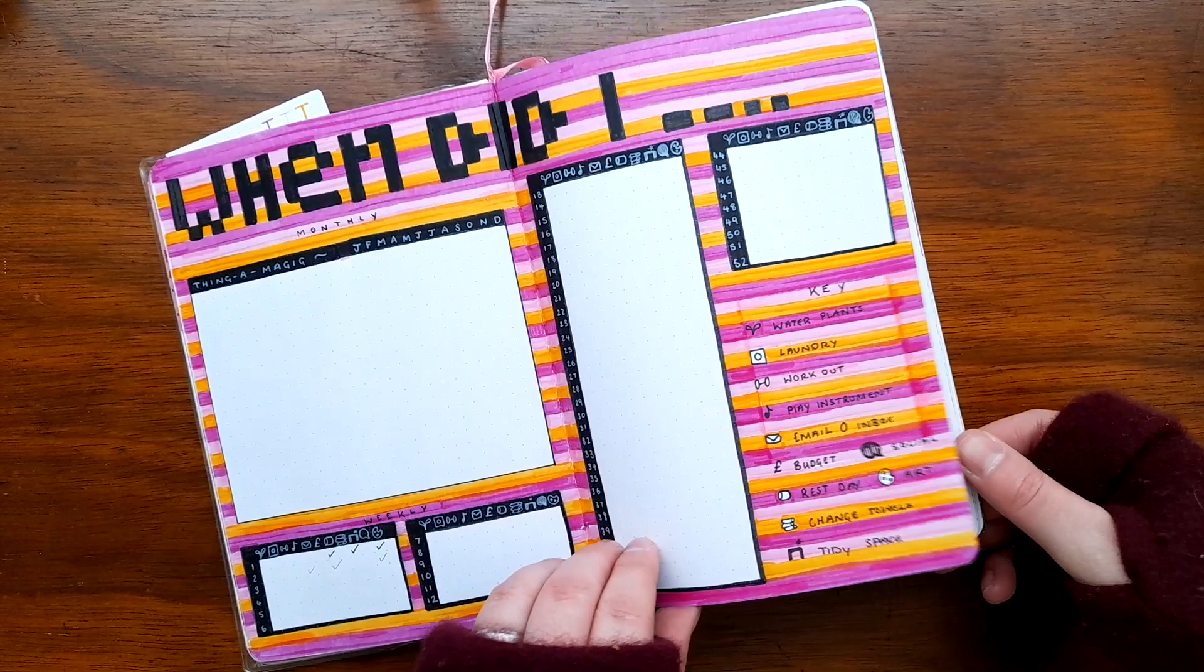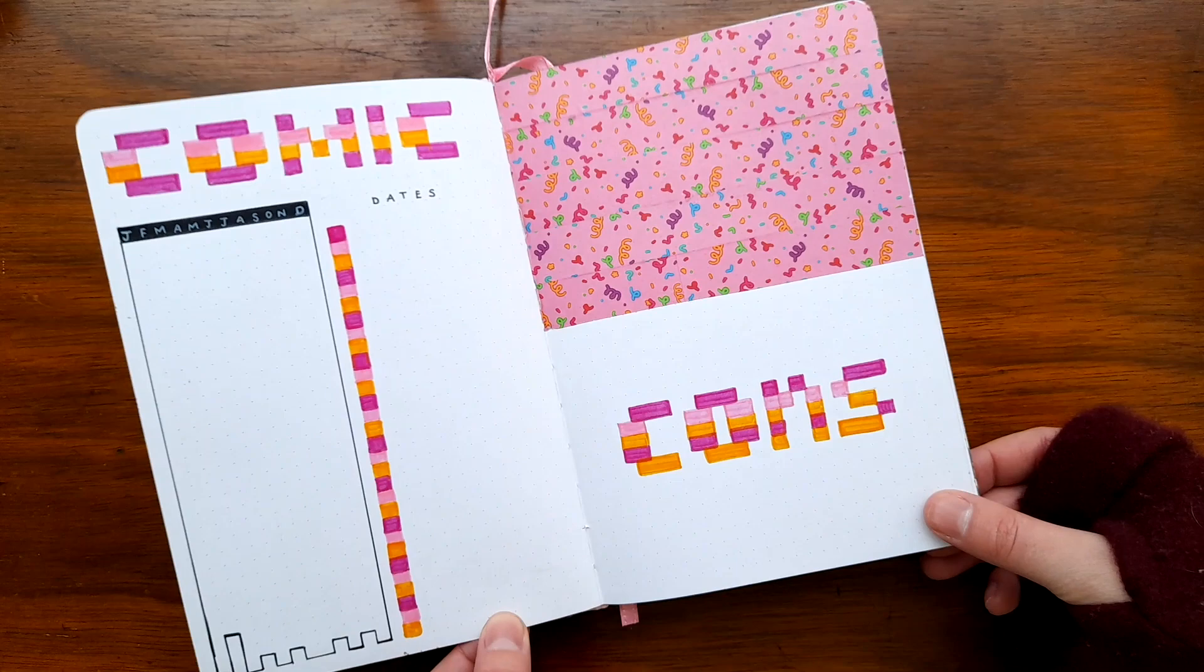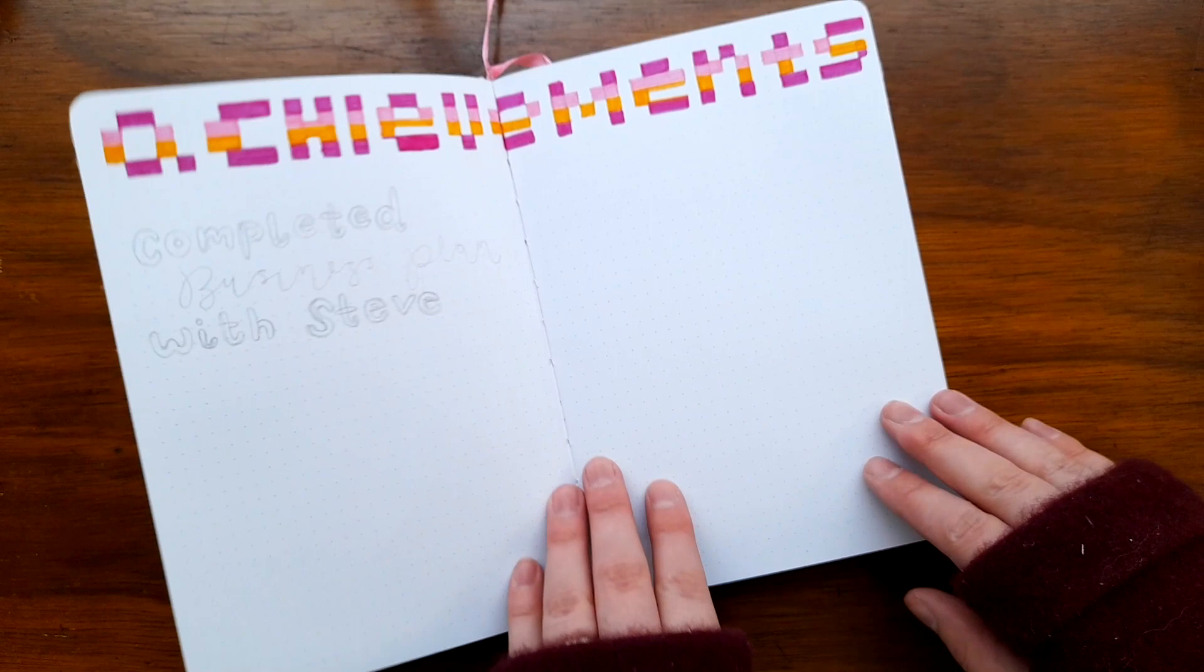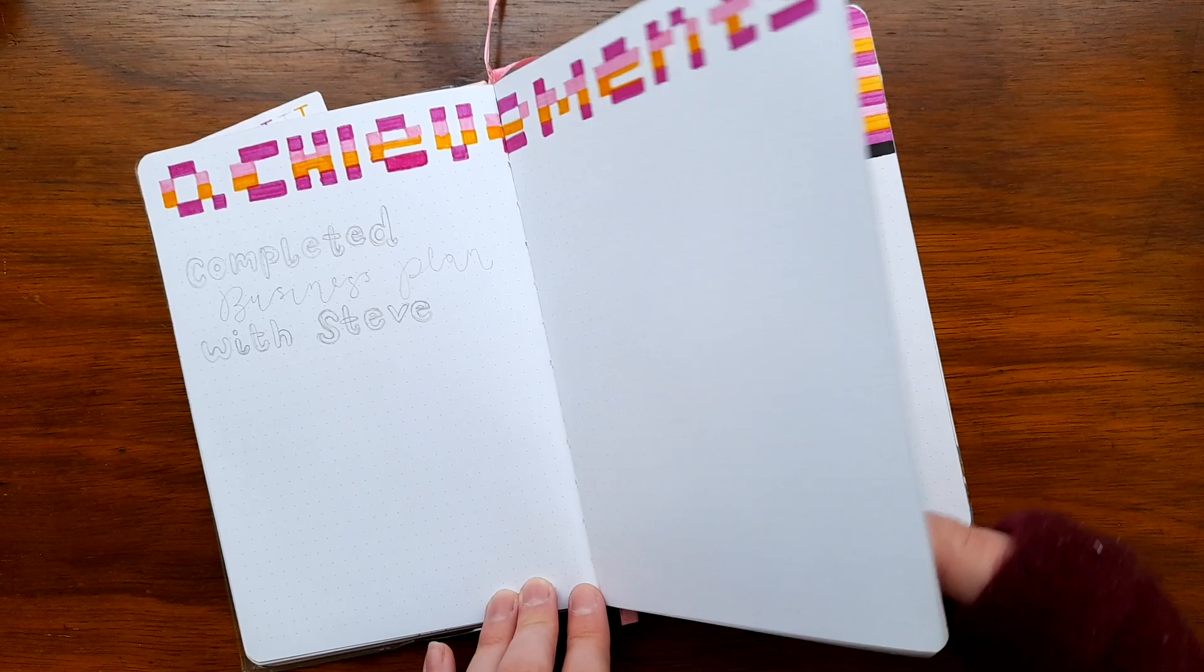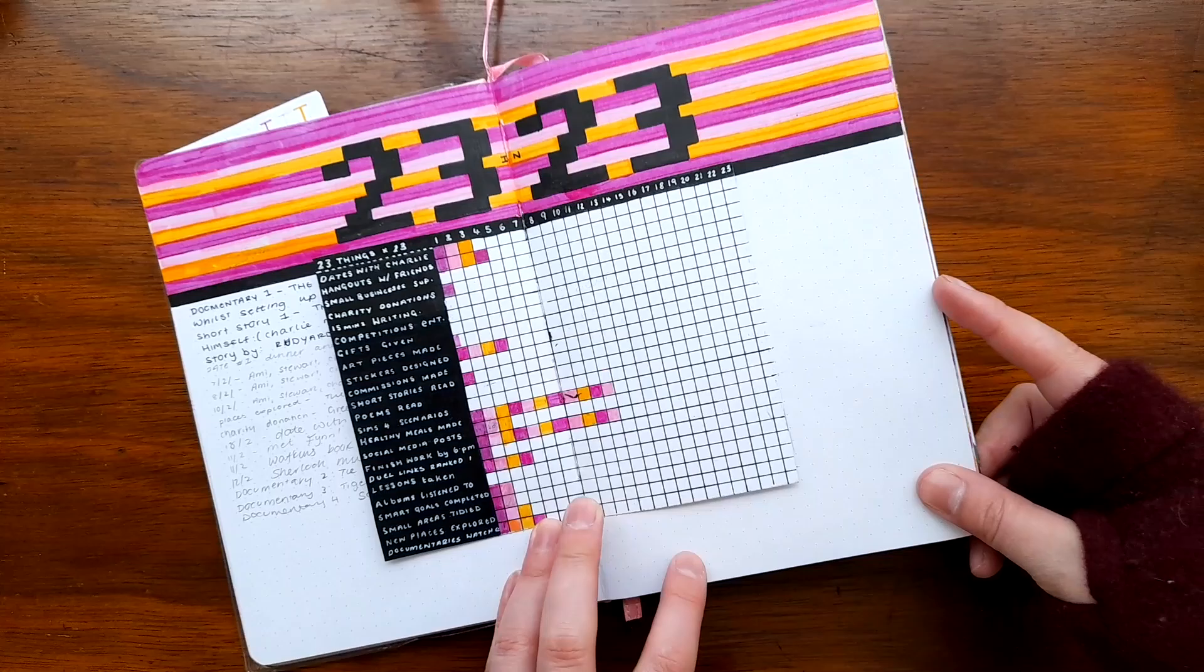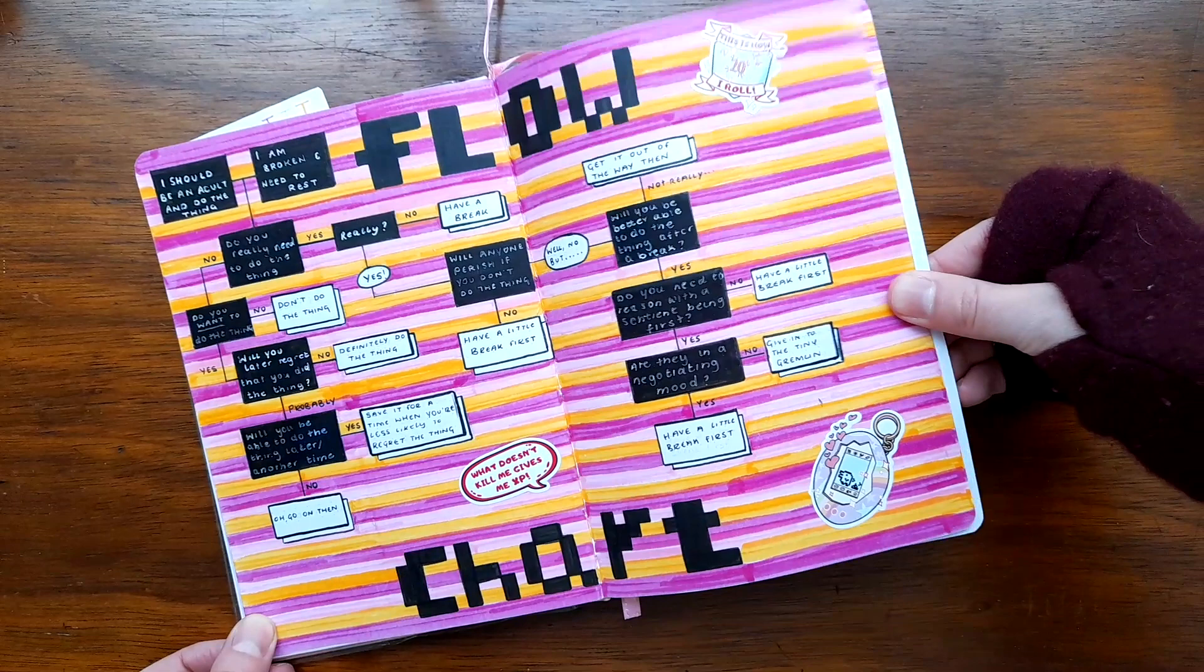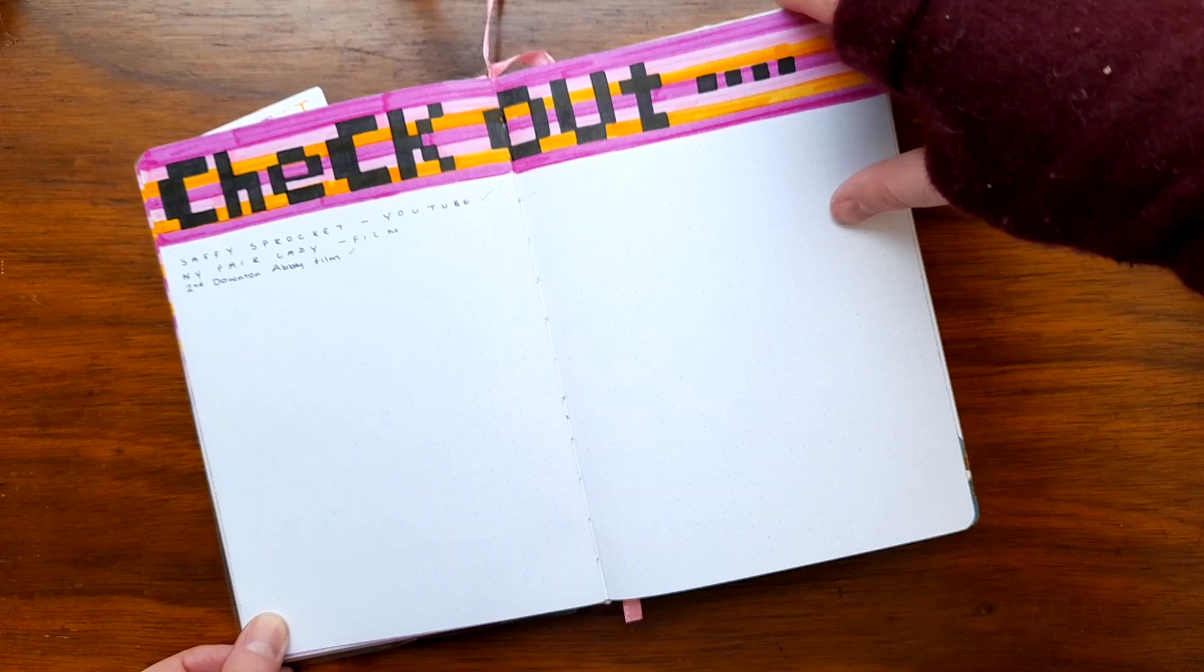My next spread is my 23 in 2023 tracker page. I've set this up as a dutch door and it's kind of a year in pixels tracker in the middle. On it are 23 things that I want to do 23 times in 2023. I got this idea from Joshi Corinne. The pages behind the tracker are for me to jot down notes for the date that I did the thing and what the thing was. So for example I've got watch documentaries so I can write down the date and the name of the documentary. This is also to kind of stop me from doubling up and crossing something off twice because my memory is shocking hence why I need to journal.